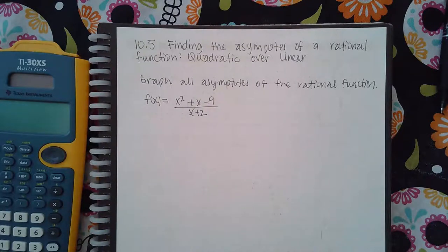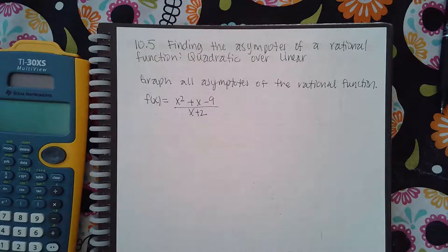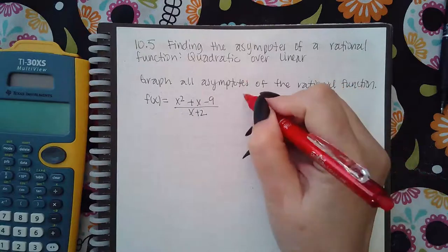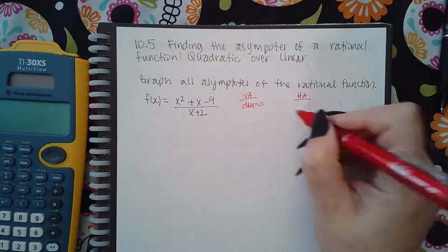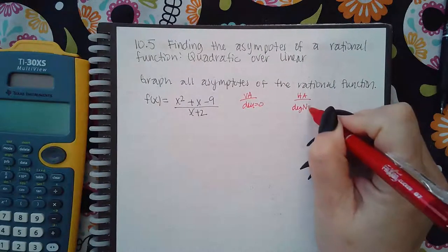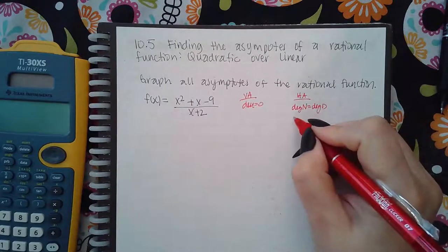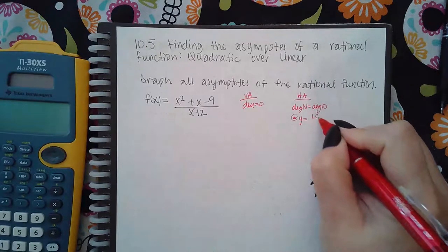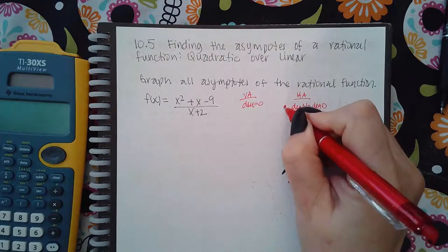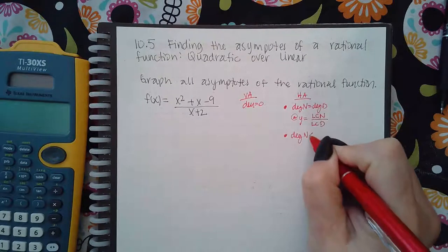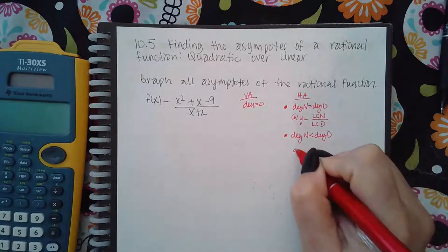They're going to ask me to graph all asymptotes, which means it could be vertical, horizontal, or what we call oblique or a slanted asymptote. I've already gone over vertical asymptotes — you set the denominator equal to zero and solve. For horizontal asymptotes, if the degree is equal on the numerator and denominator, then it's at y equals the leading coefficient of the numerator over the leading coefficient of the denominator. Or, if the degree of the numerator is less than the degree of the denominator, it's automatically at y equals zero.